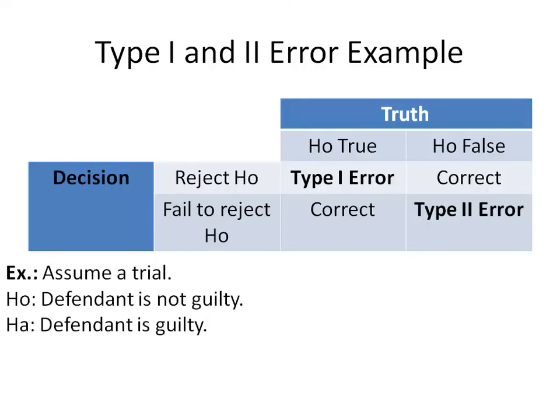You can think of this as an example where you're assuming a trial, and somebody's being brought to trial for a crime. The null hypothesis in the court of law is that a defendant is not guilty, and the alternate hypothesis would be that the defendant is guilty. So type 1 error in that instance would be convicting an innocent person because you're rejecting the null hypothesis. You're saying the defendant is guilty when, in fact, they aren't.